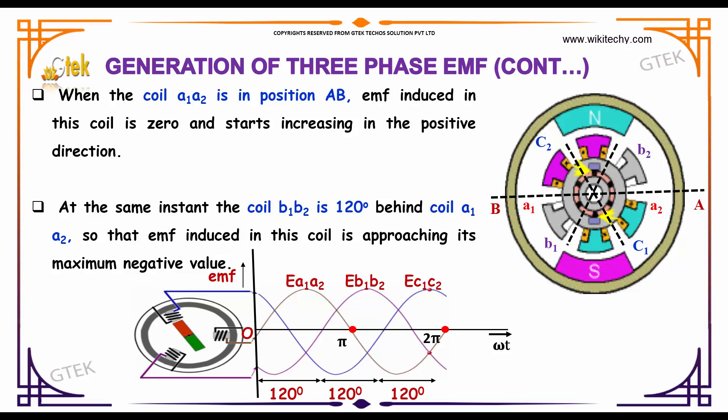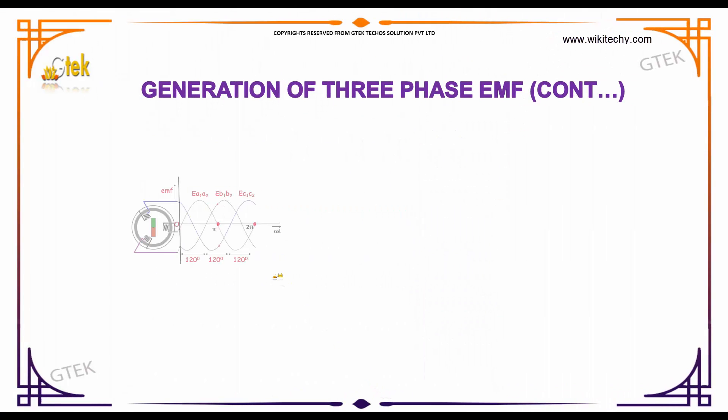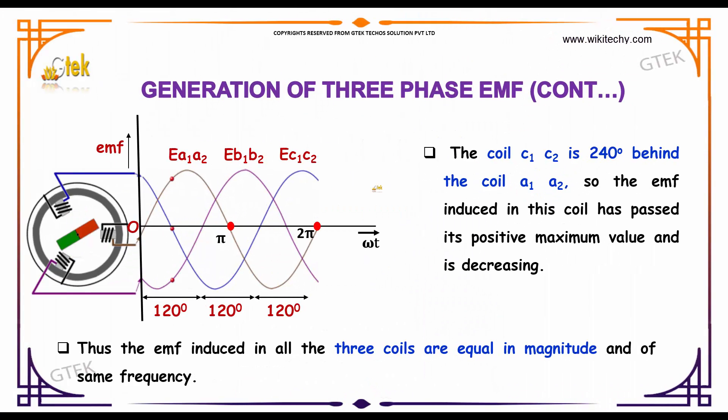You are able to see the current passed from three different coils which are at 120 degree displacement. So the coil C1C2 is 240 degrees behind coil A1A2. So the EMF induced in this coil has passed its positive maximum value and is decreasing.